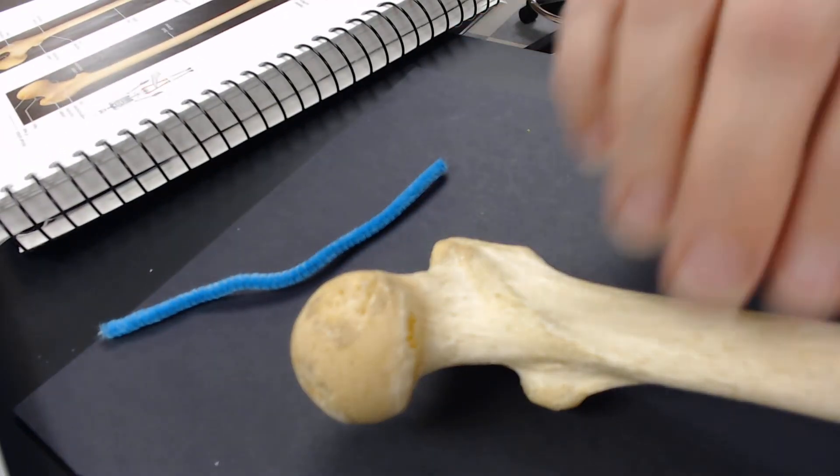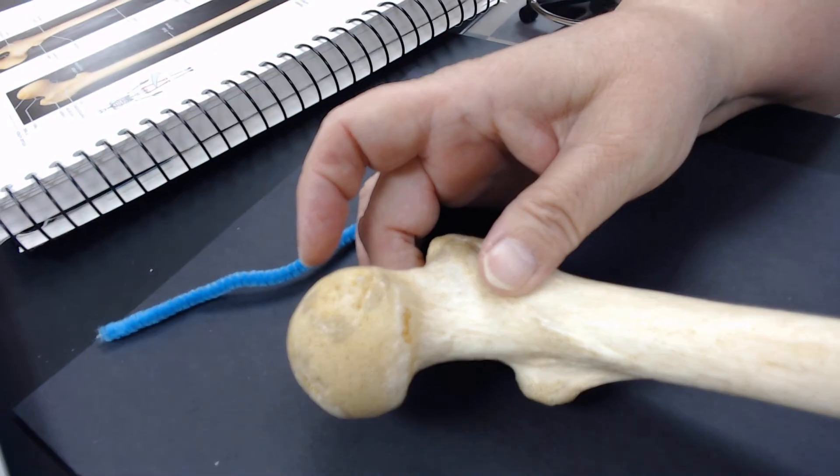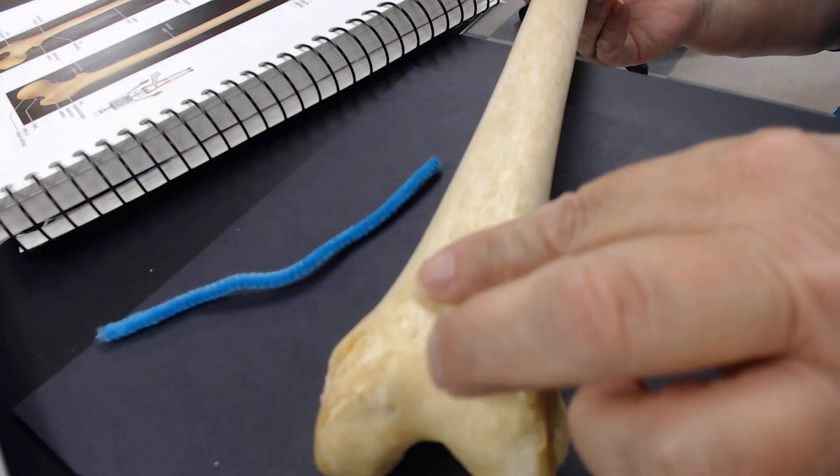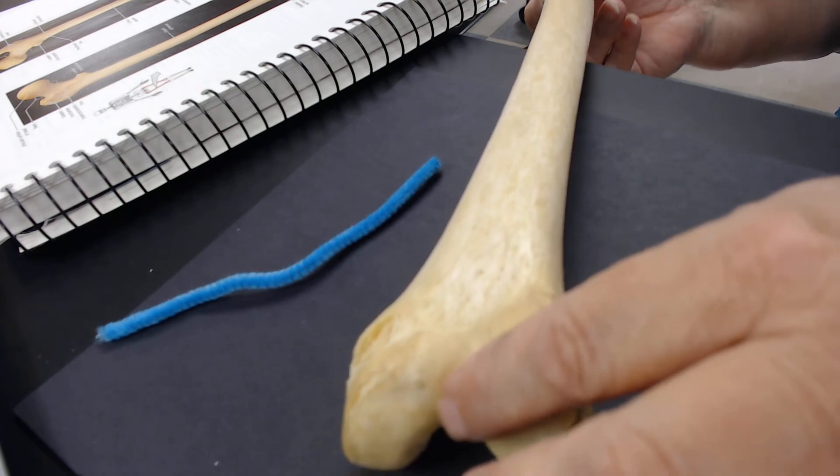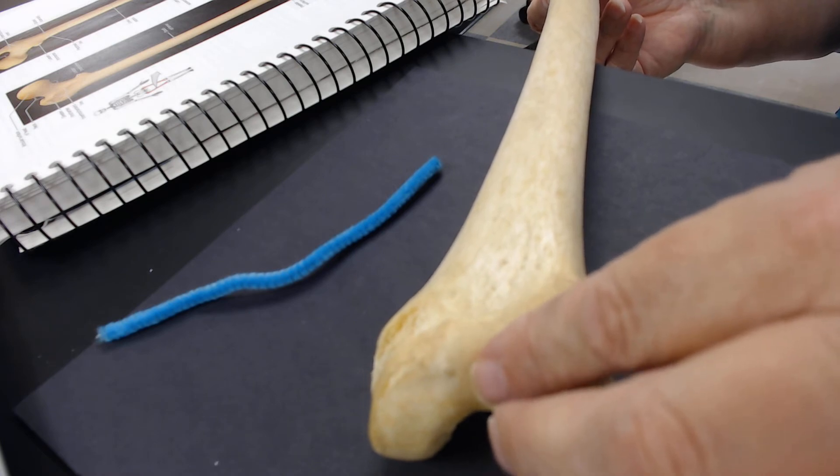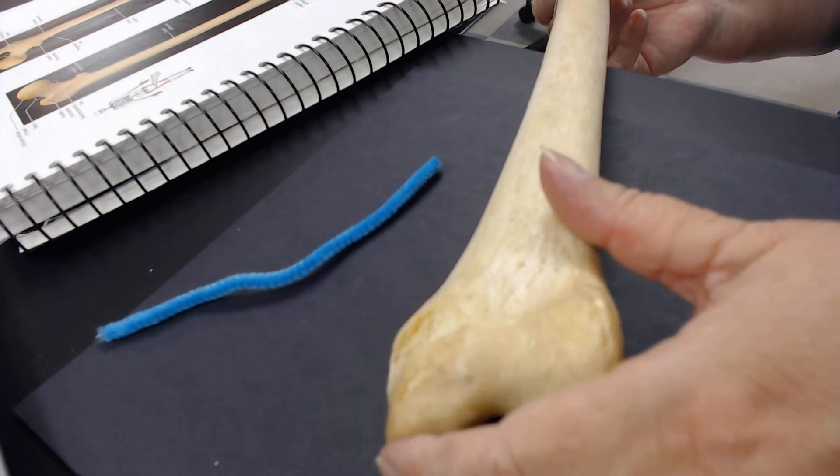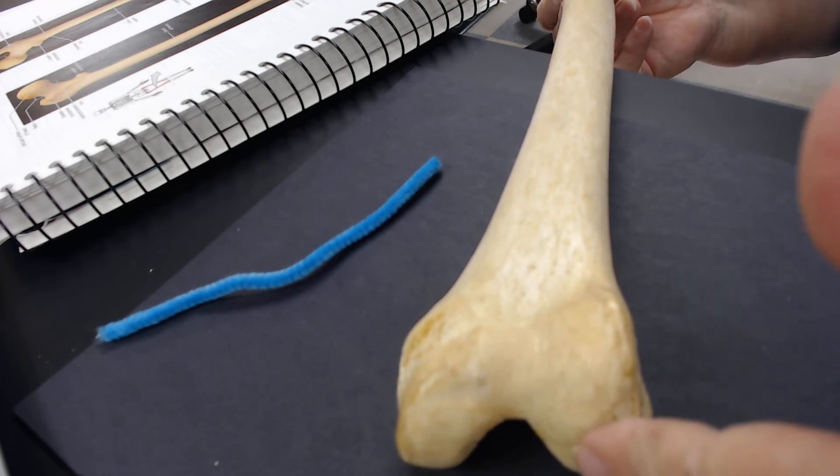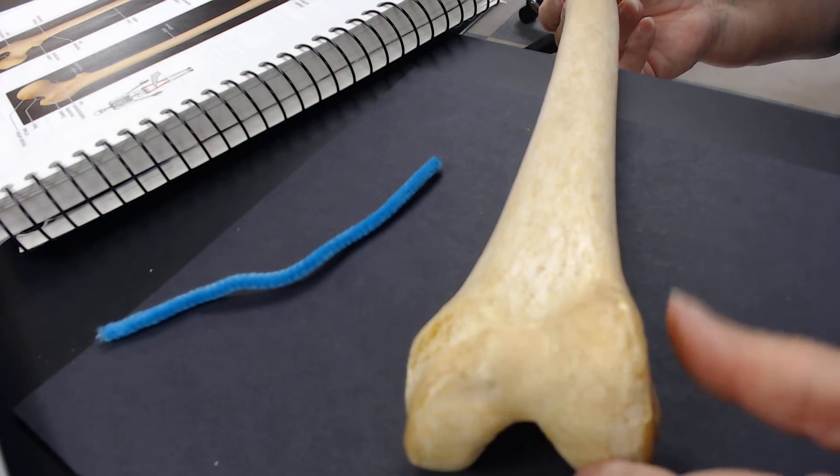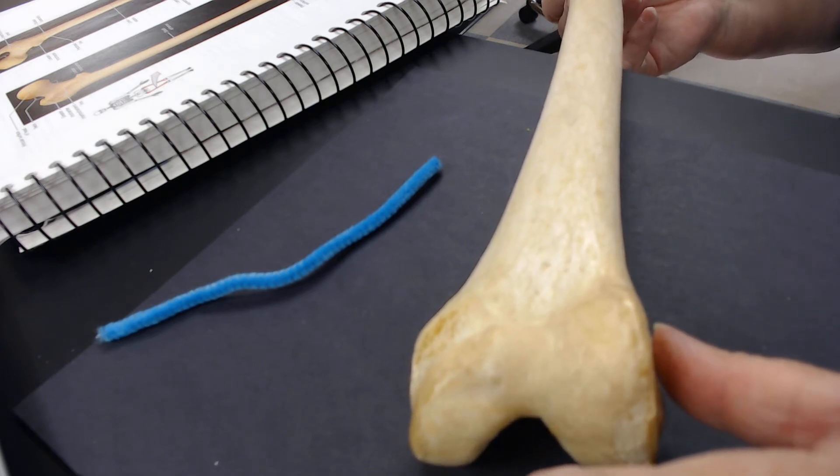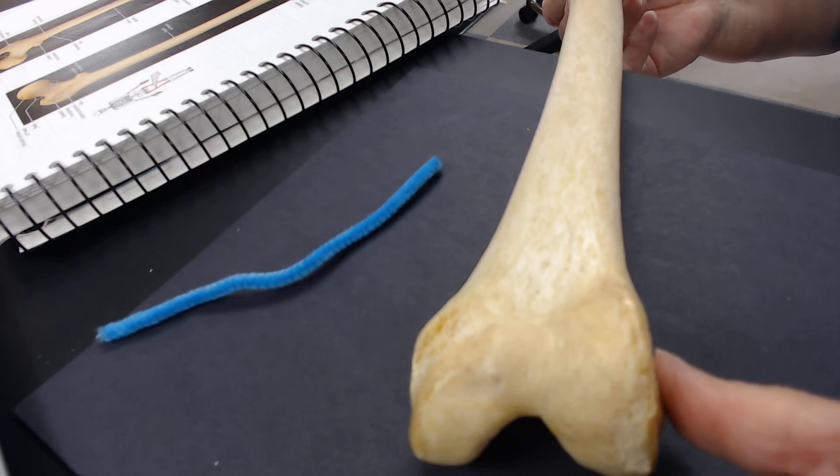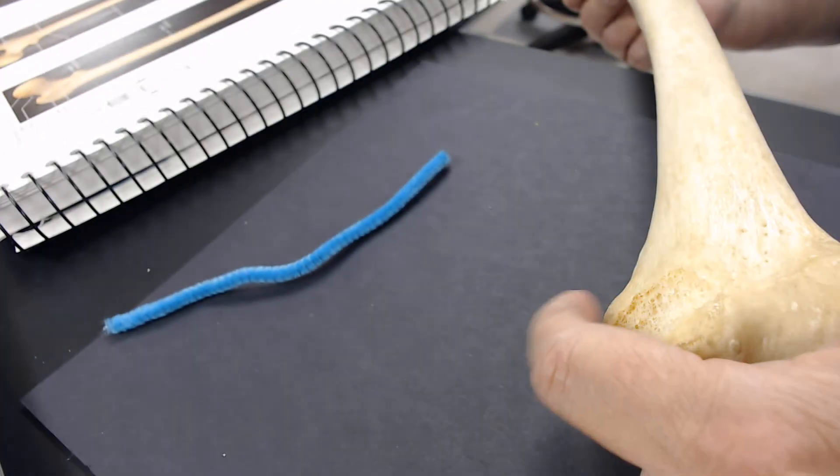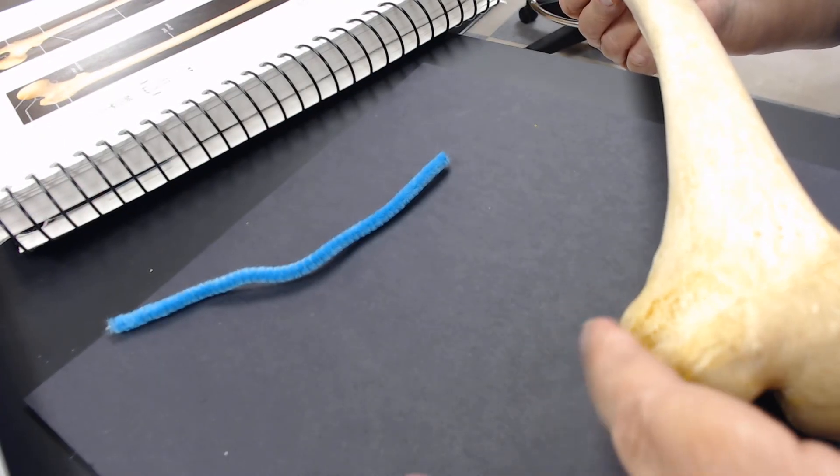Now, we are still on the front, so let's look at the distal end. This is the patellar surface. This is the medial condyle, lateral condyle. This is the lateral epicondyle, and then there's our medial epicondyle, patellar surface.